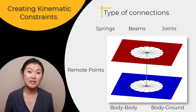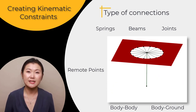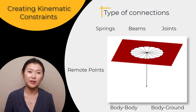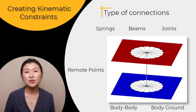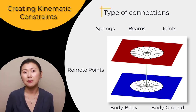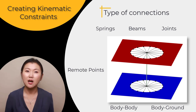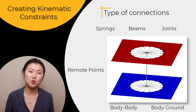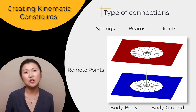In the case of a body-to-ground connection, one remote point is situated on the body whereas the other remote point is grounded. Due to the reduced degree of freedom, these connections offer a simpler but more efficient representation of a connection between two parts.